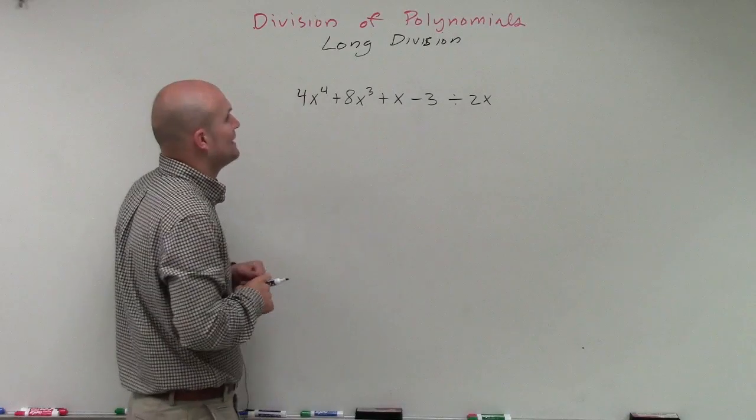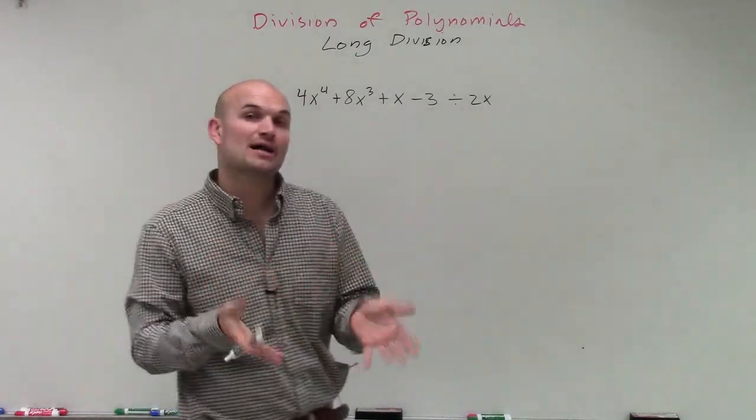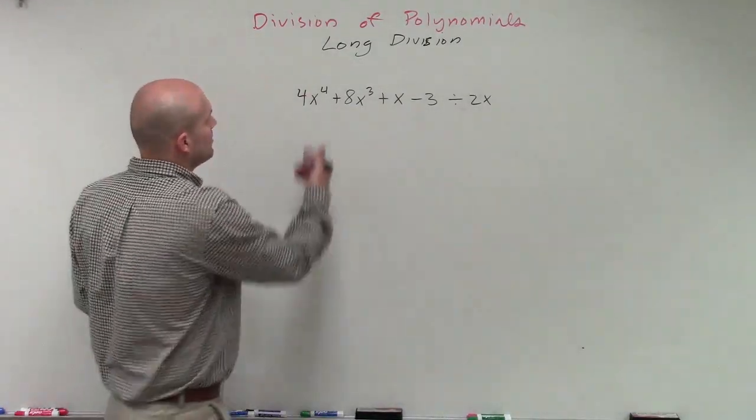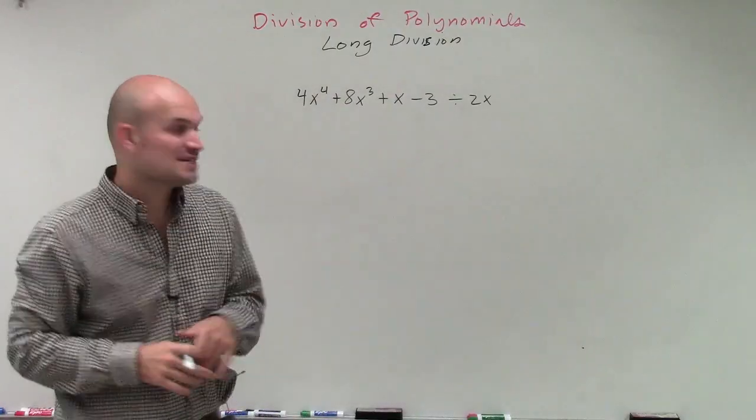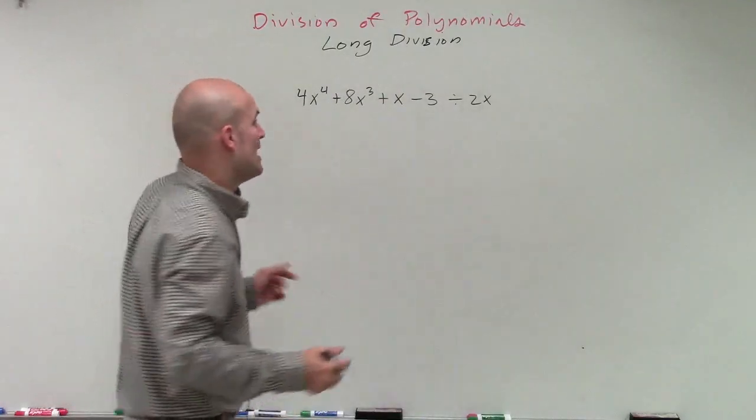Welcome. So what I'm going to do is show you how to divide a polynomial by this monomial. And what we have here is 4x to the fourth plus 8x cubed plus x minus 3 divided by 2x.